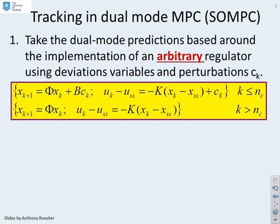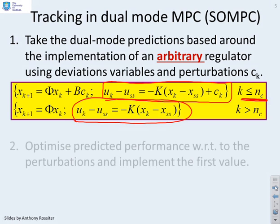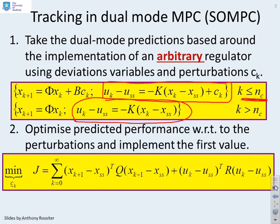Now here's the paradigm or the algebra that we used in the earlier chapter. So we said the predictions that you use in the typical dual mode strategy look something like this. So you'll see the input predictions. I've got UK minus USS equals minus K XK minus XSS plus CK. So that's the transient mode, so for the first NC steps. And then you've got your terminal mode control law.